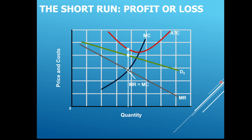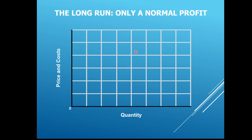Now the same concept but showing a loss: where MR equals MC gives us Q2, but ATC is greater than the price — the firm experiences a loss. Going back to the profit scenario, firms enter and the demand curve shifts left. In the loss scenario, firms leave the market; consumers go to the remaining pizza places, and their demand curve and MR curve shift to the right, finding a higher output until we end up at zero economic profit.